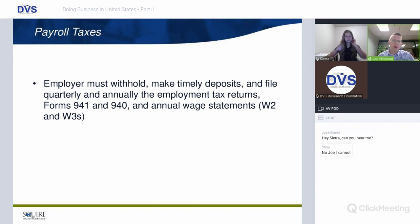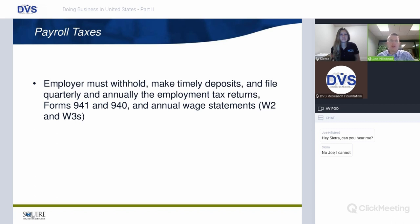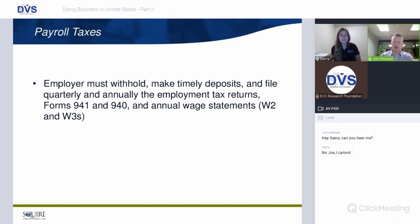Employers must withhold taxes, make timely deposits, and file quarterly and annual employment tax returns. All employees are familiar with the W-2 form — employers issue a W-2 to all employees at year end reporting their earnings and wages. This is also filed with the IRS, so when an employee files their individual tax return, the IRS matches the reported wages to what the employer submitted. Any discrepancies are flagged.